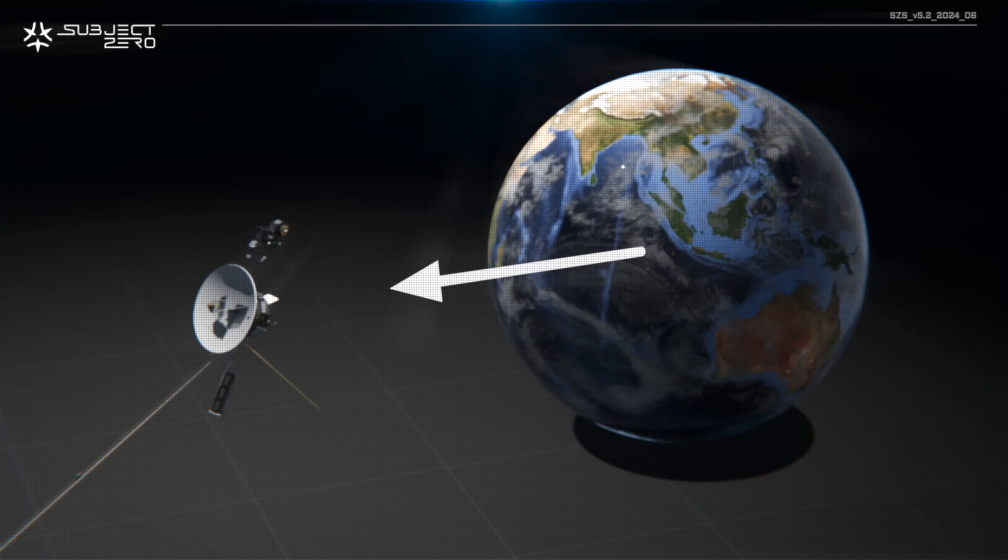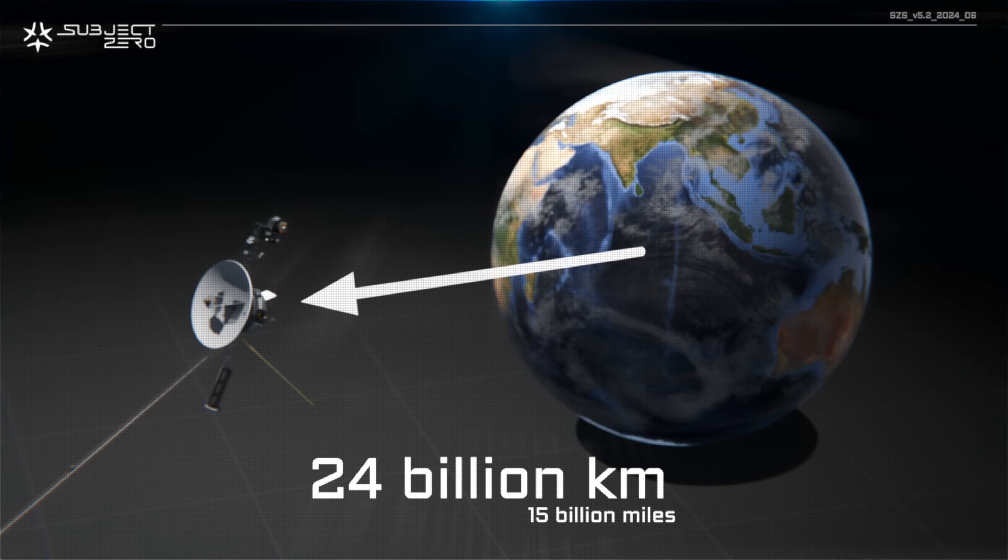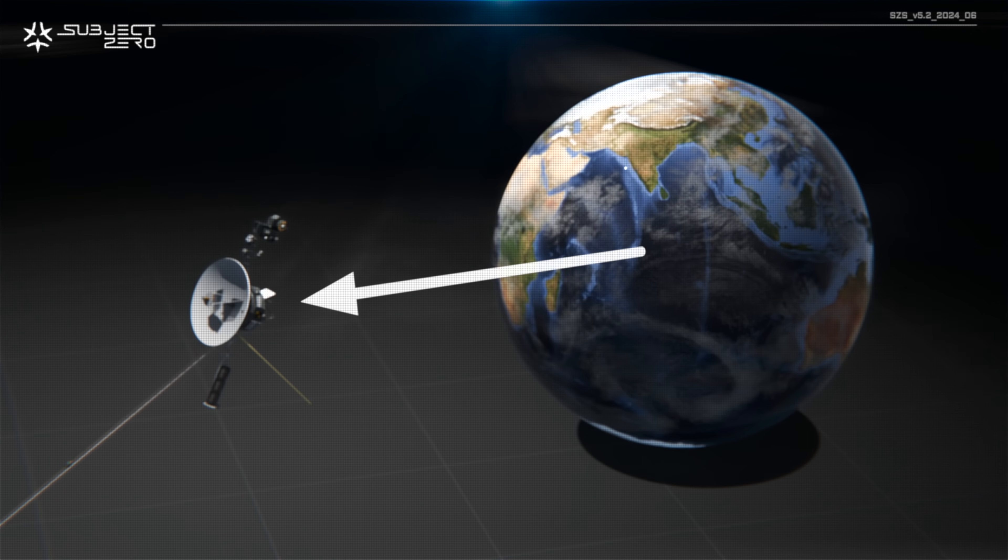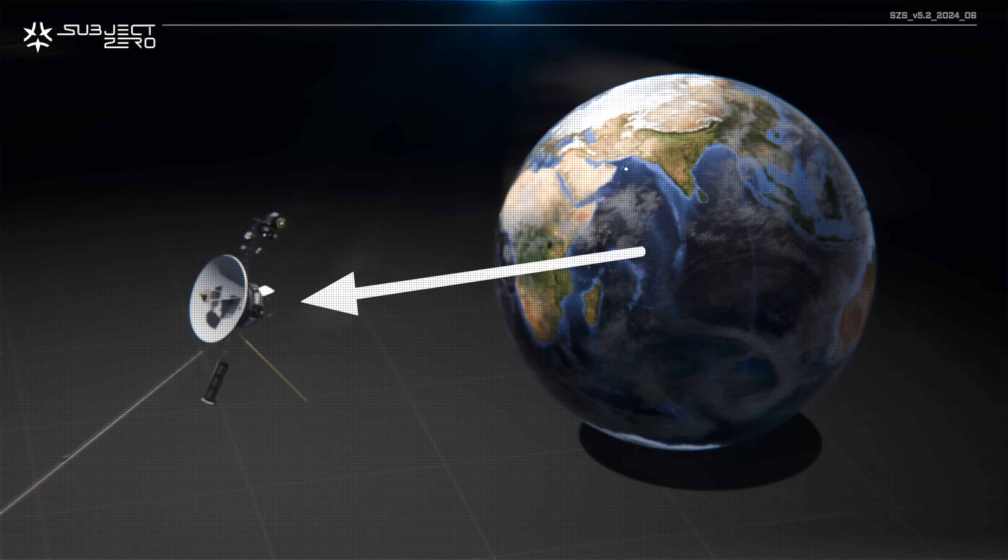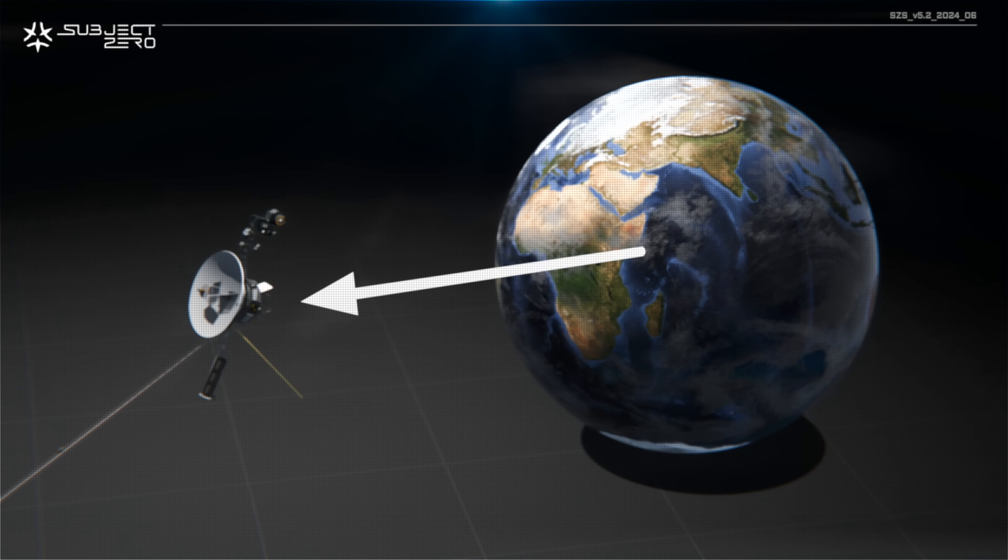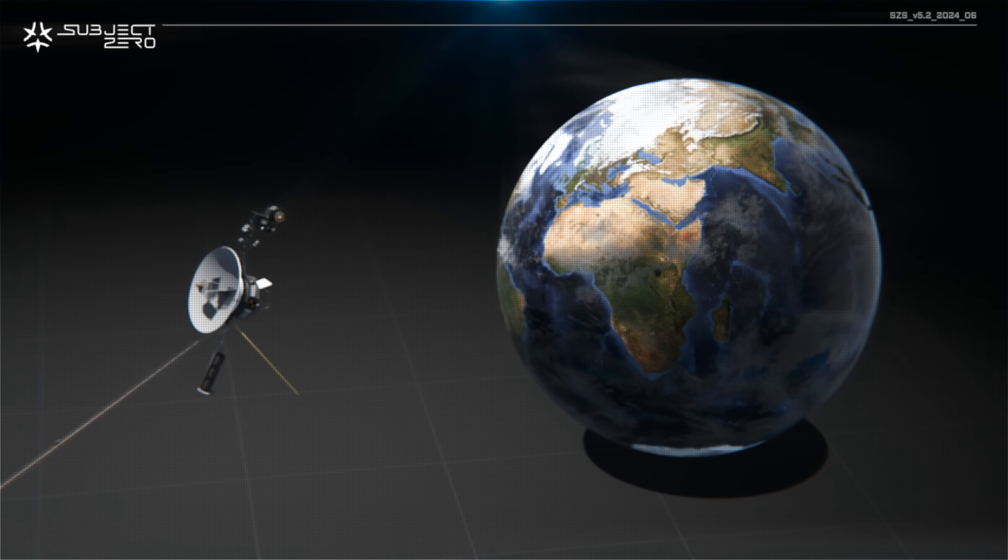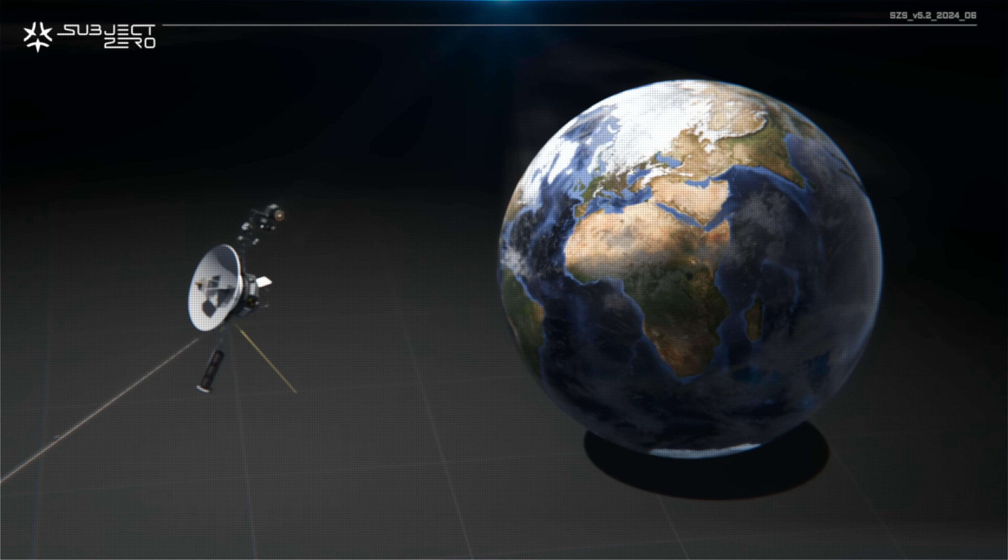Lastly, we need to consider the traveling distance. 24 billion kilometers is very far away. If we were to travel at the speed of Voyager 1 itself, 61,000 kilometers an hour, it would take 46 years to get to where it is today. In other words, to catch up to it, we need to go faster.